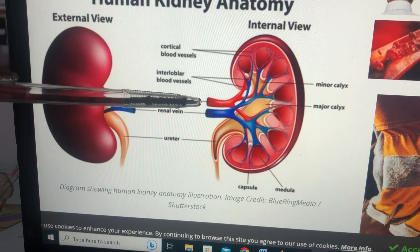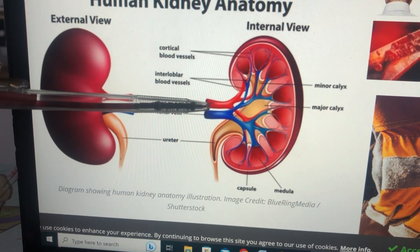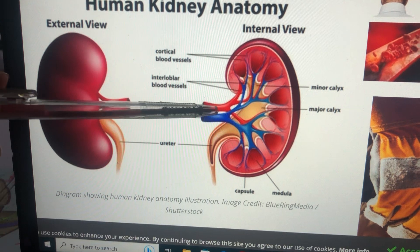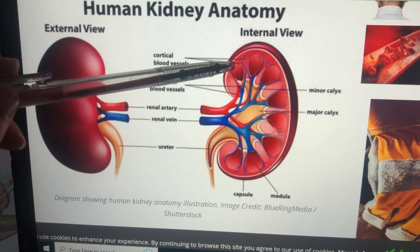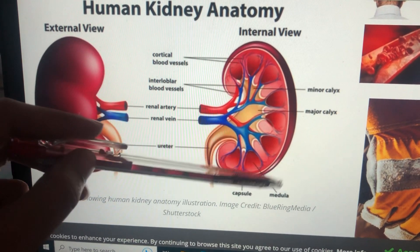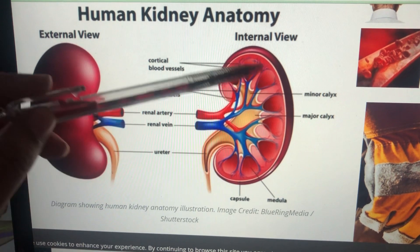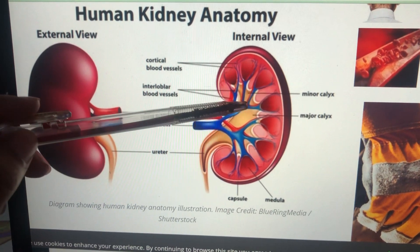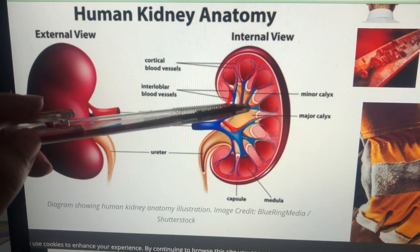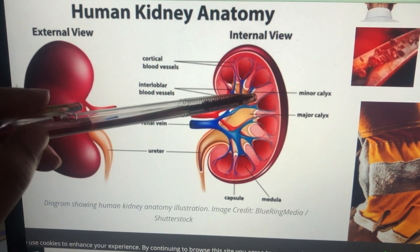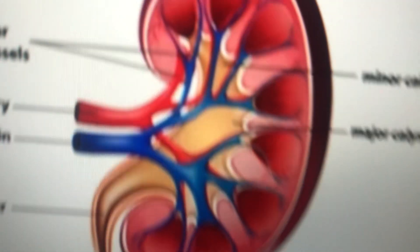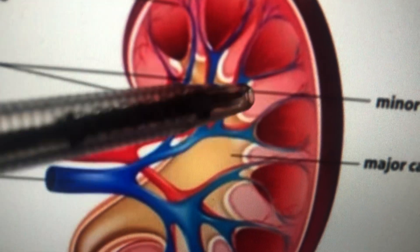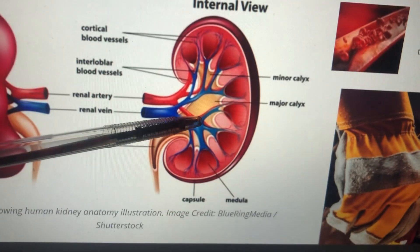When the artery brings the unpurified blood inside the kidney, it is first absorbed in the cortex. From the cortex it starts to enter the medulla. From the medulla, the major and minor calyces are present, and this is where some people get kidney stones — it's one of the most sensitive parts.